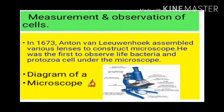Cells are extremely minute in size. We cannot see cells with the naked eye; we require a microscope. Micrometer and nanometer are the units used for measuring their sizes. The compound microscope is used for observing cells. An object on a glass slide is magnified many times by the lens of this microscope. We place bacteria, viruses, and other samples on the slide, put it into the microscope, and can then see what exactly it is.